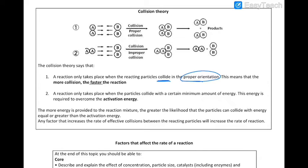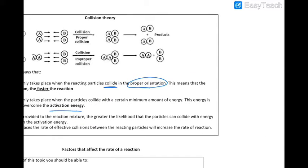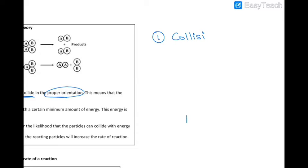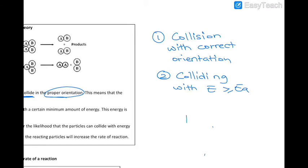A reaction only takes place when the particles collide with a certain minimum amount of energy, called the activation energy. So the two things that need to occur for a reaction to take place: first, there should be a collision with correct orientation, and second, the energy of the particle should be greater than or equal to the activation energy.